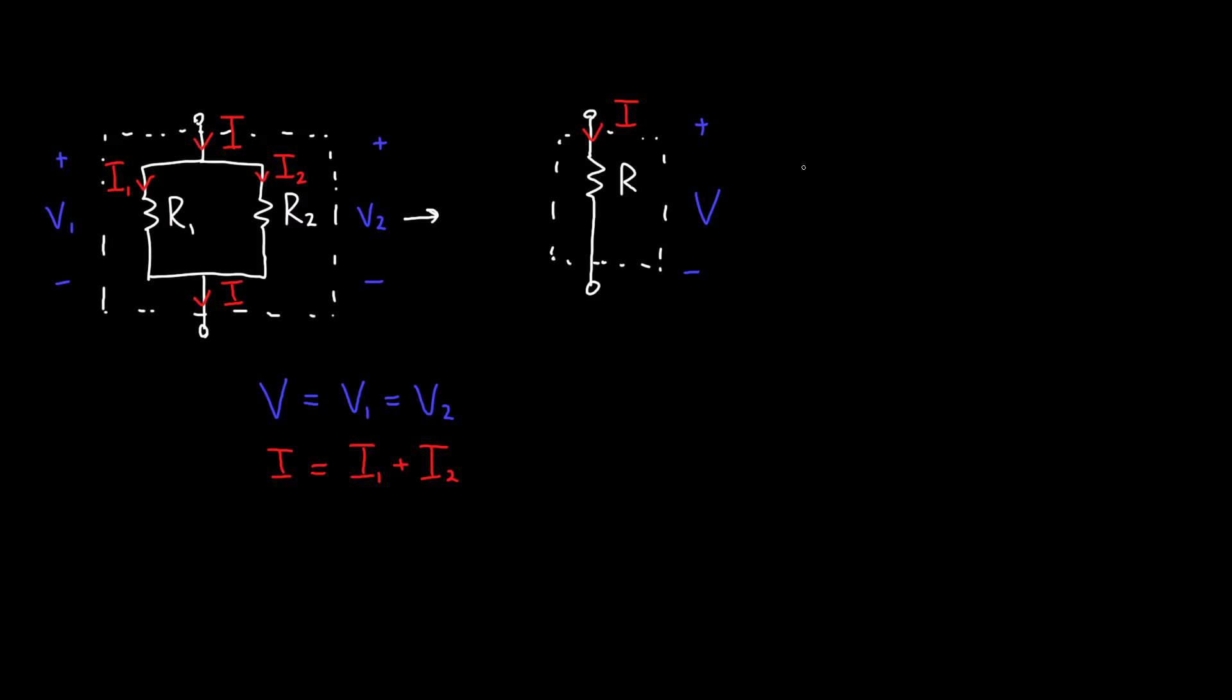Now we can play exactly the same trick that we did before. We know that the resistance is equal to the voltage divided by the current. And so if we just blindly plug stuff in, we'll see that that's equal to V1, or just V, divided by I1 plus I2.